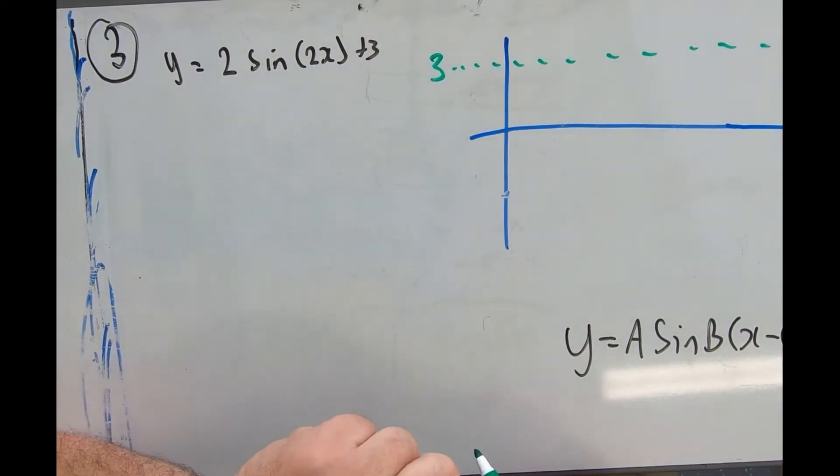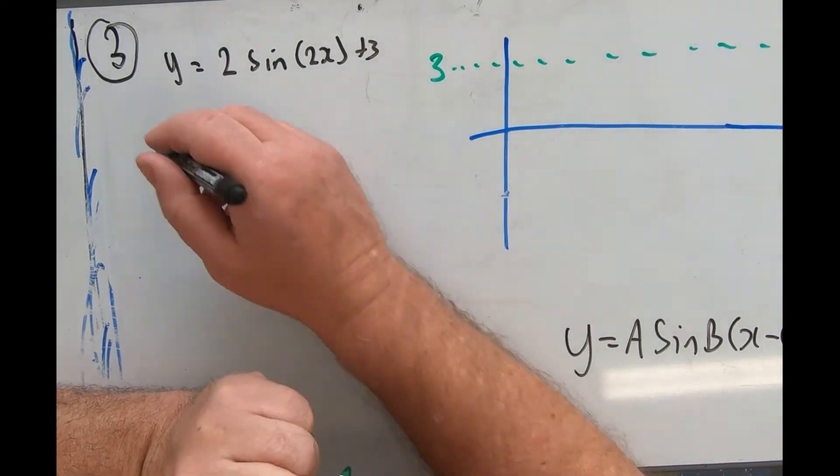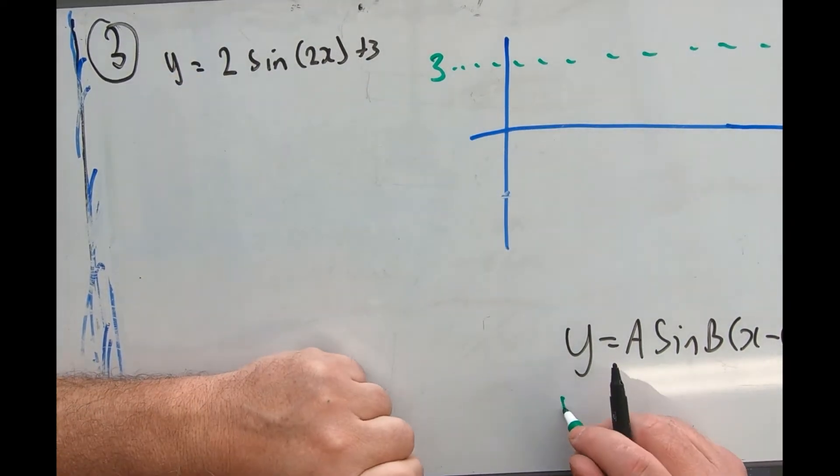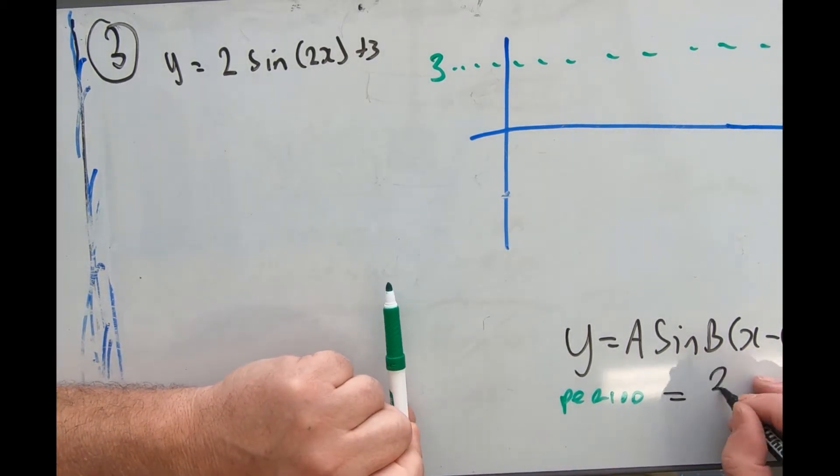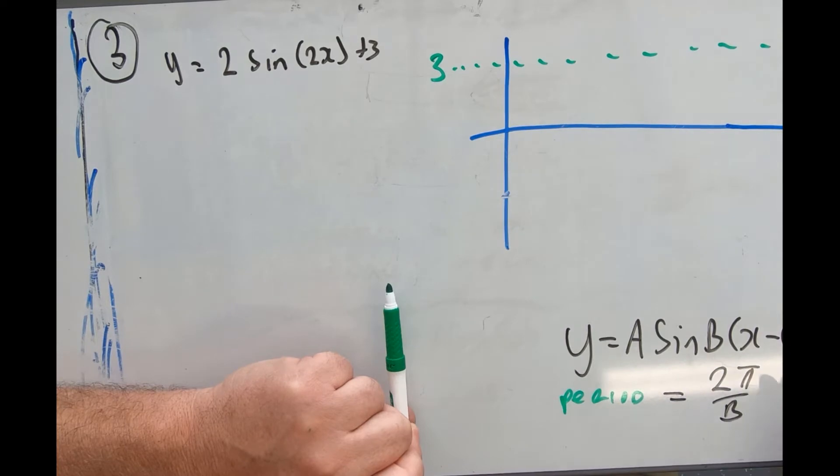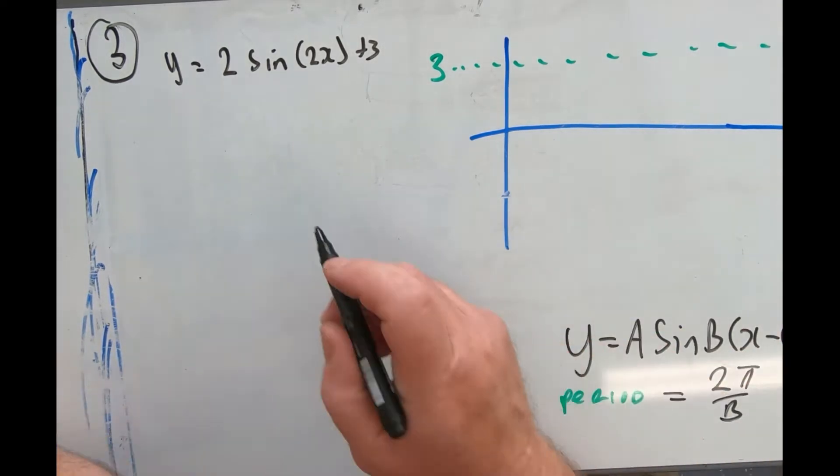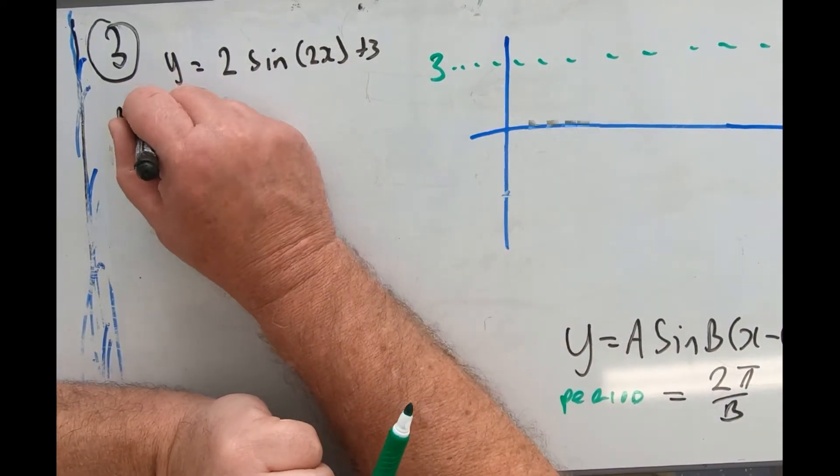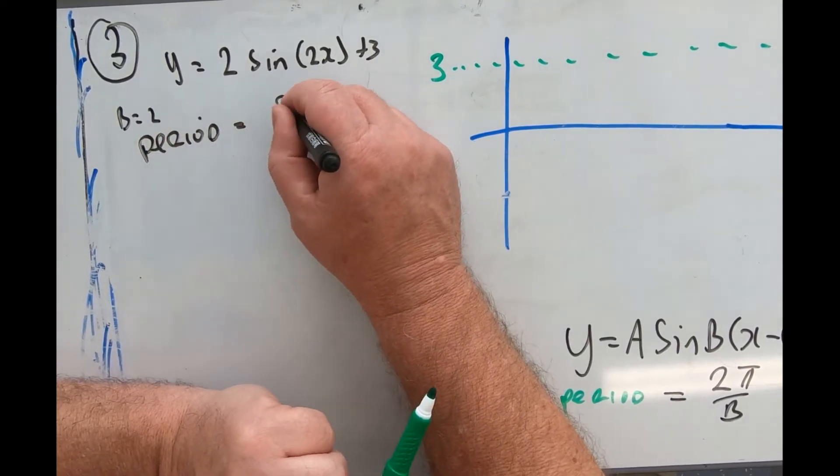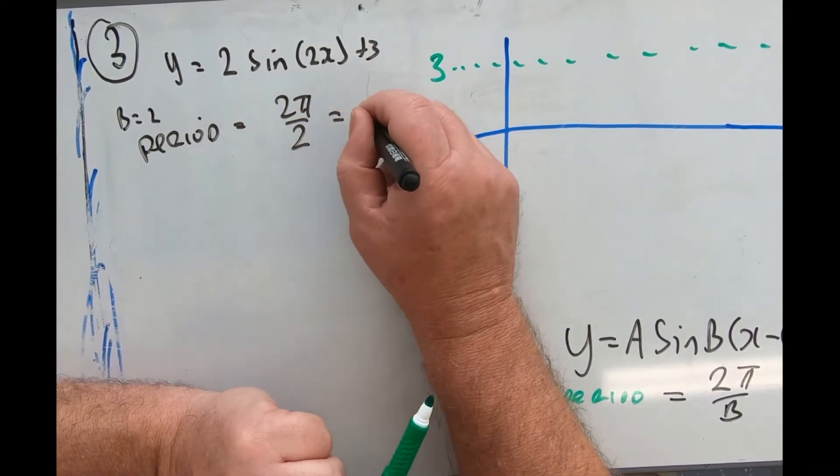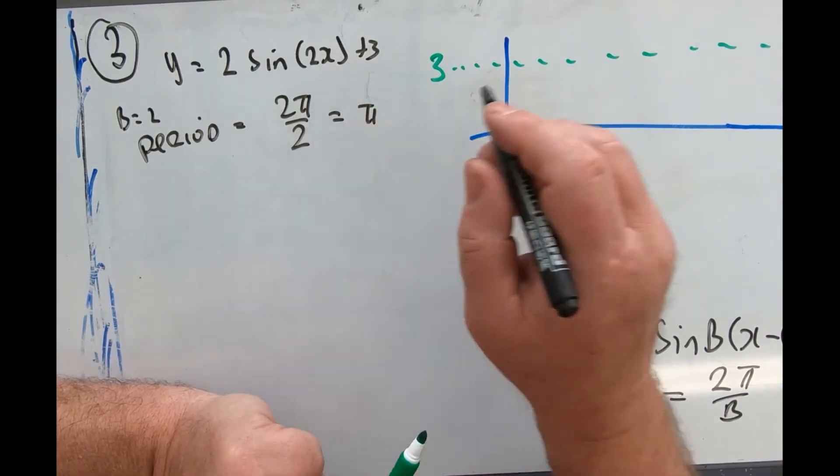The period. Okay, so what's the formula for period? It is P equals 2π over B. With this question, B equals 2, so the period is 2π over 2, which means π. It repeats every π.